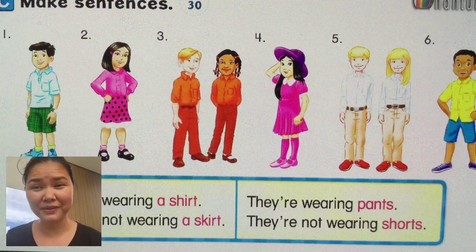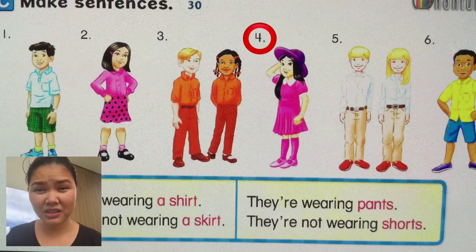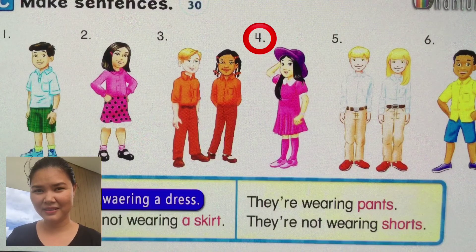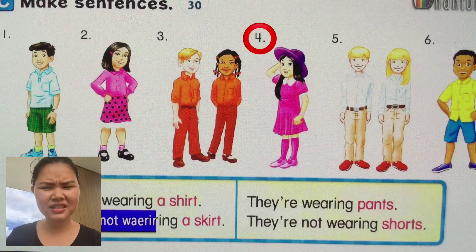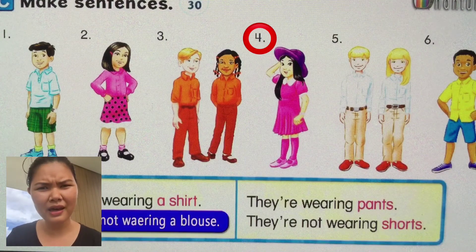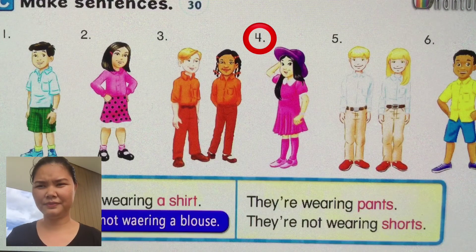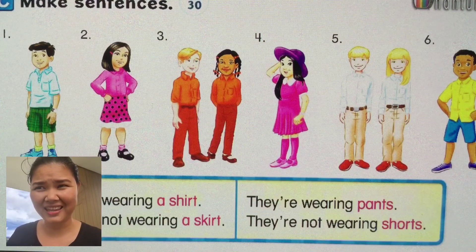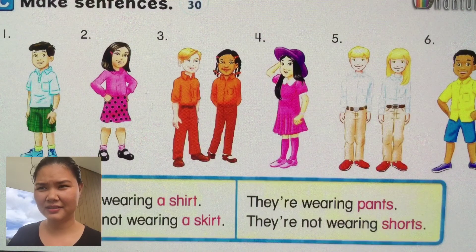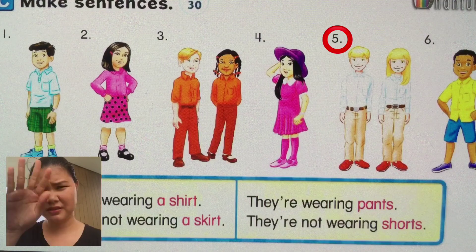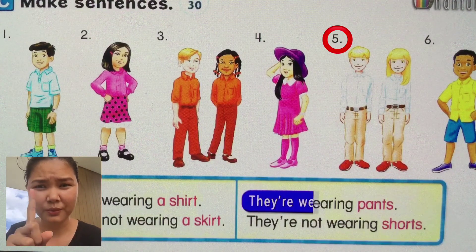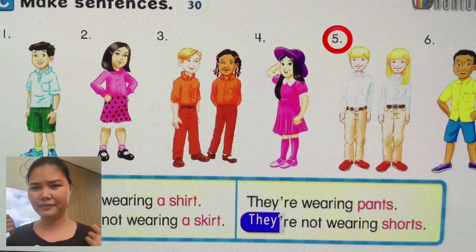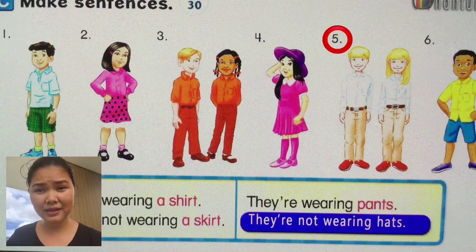Number four: that's a girl, so the subject will be 'she'. She's wearing a beautiful pink dress. She's not wearing a blouse. Number five: the subject will be 'they'. They're wearing shirts. They're not wearing hats.